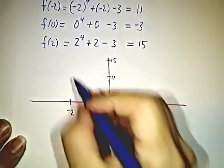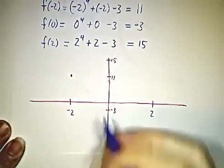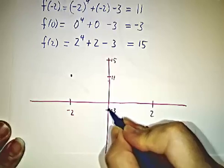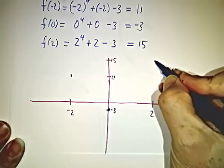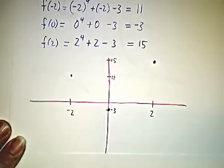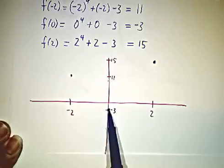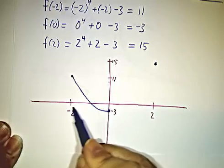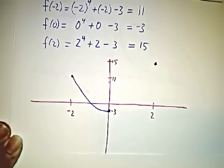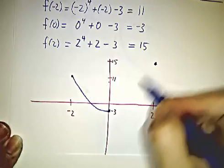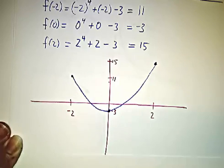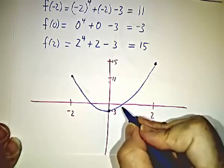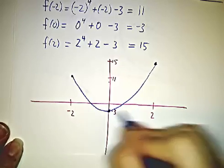So what we've got is that at negative 2 we're at 11, at 0 we're at negative 3, and at 2 we're at 15. Well, to go from 11 to negative 3, you have to cross through 0. So there has to be a root between negative 2 and 0. To go from negative 3 to 15, you have to cross through 0. So there's a root between 0 and 2.